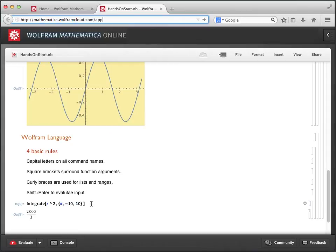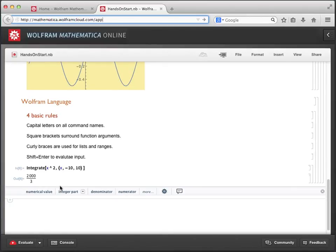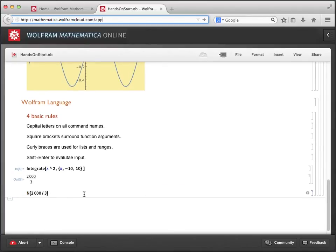Now let's take a look at that result, which was returned as 2000 over 3. Mathematica Online will always give you the most exact answer possible, depending on the command you have used and the type of arguments you have supplied. In this case, maybe what we were really after is the numerical approximation. So we can click numerical value to get a numerical result. We'll discuss this a bit more in the next video as well.